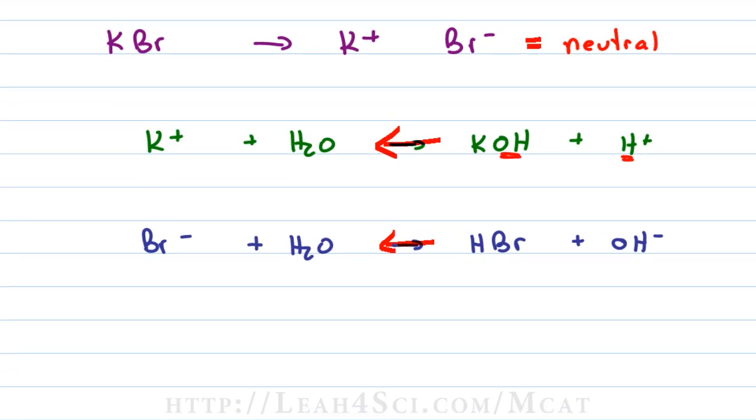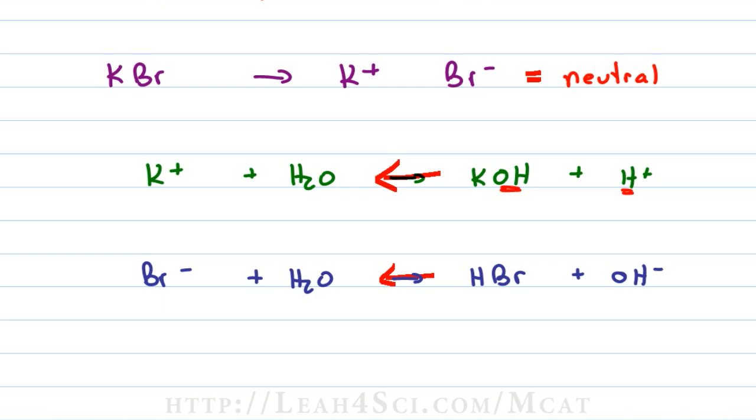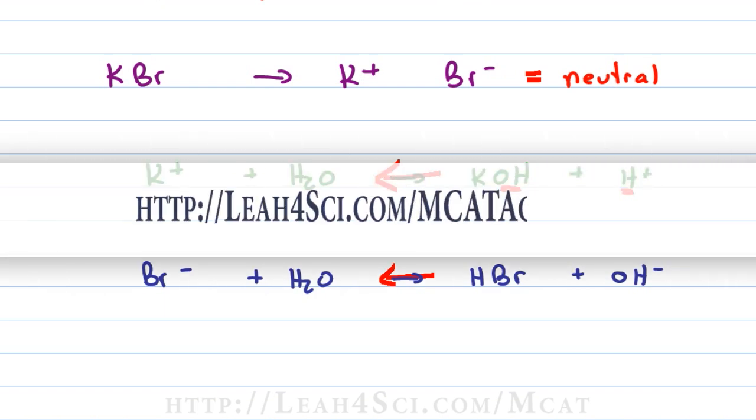So how do you know which ions to look for? Go back to the video on strong acids and strong bases and look at how the ions are set up. Once you understand the acids and bases, just look at their conjugates and recognize that those are not going to be reactive. You can find all the videos along with the practice quiz and cheat sheet by visiting my website leah4sci.com/mcatacidbase.